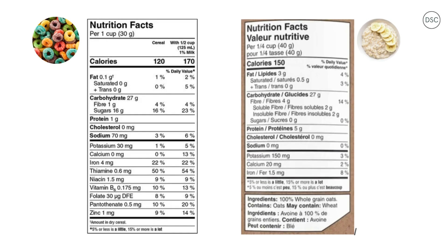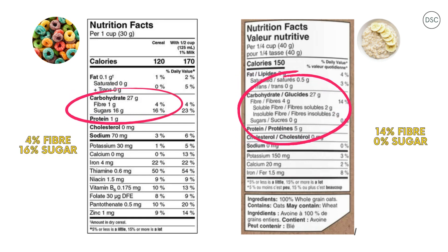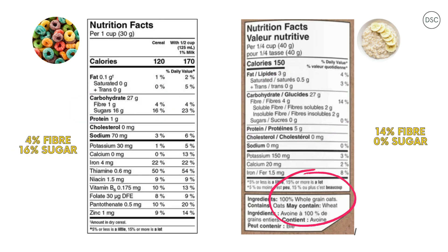This brings us to step five, where knowing this information we can compare the food with another one to choose the best option for us. Let's compare this cereal to steel cut oats. For a quarter cup of dry oats we get 14 percent fiber and zero percent sugar. When we look at the ingredients list, the only ingredient is 100% whole grain oats. So if I'm looking for an option with less sugar and more fiber, I'm better off choosing the oats and adding some nutritious inclusions like fresh fruit, nut butter, or seeds.